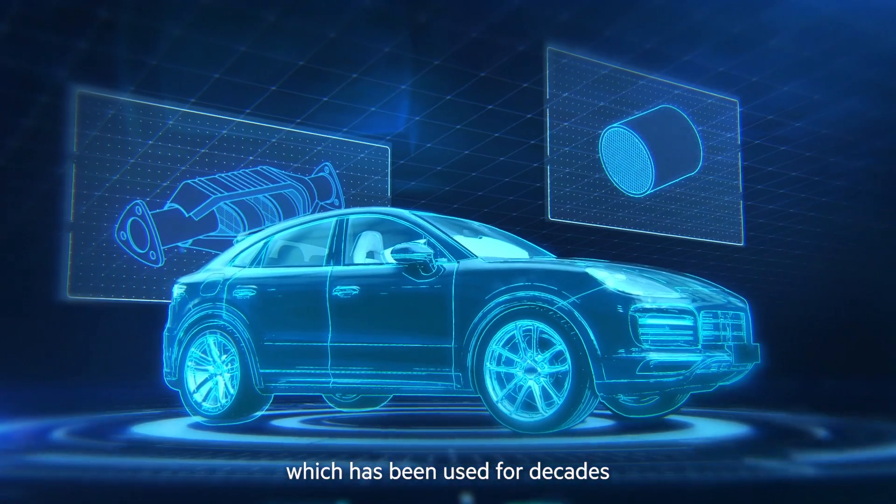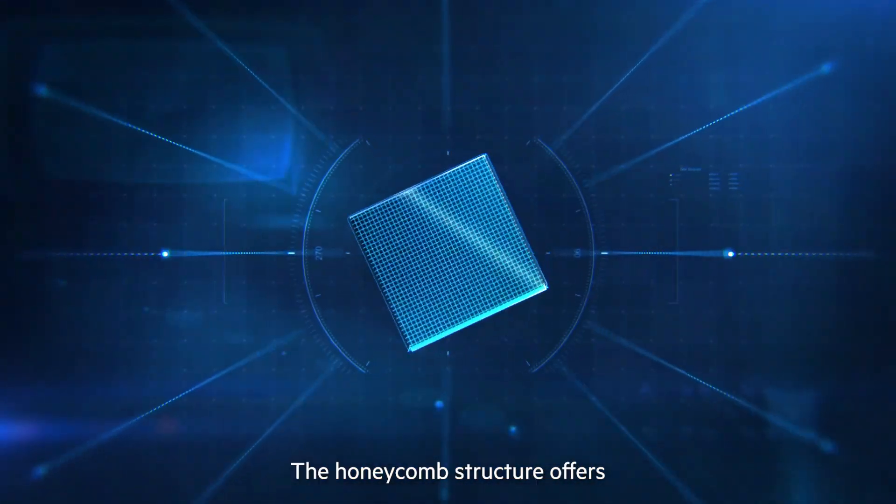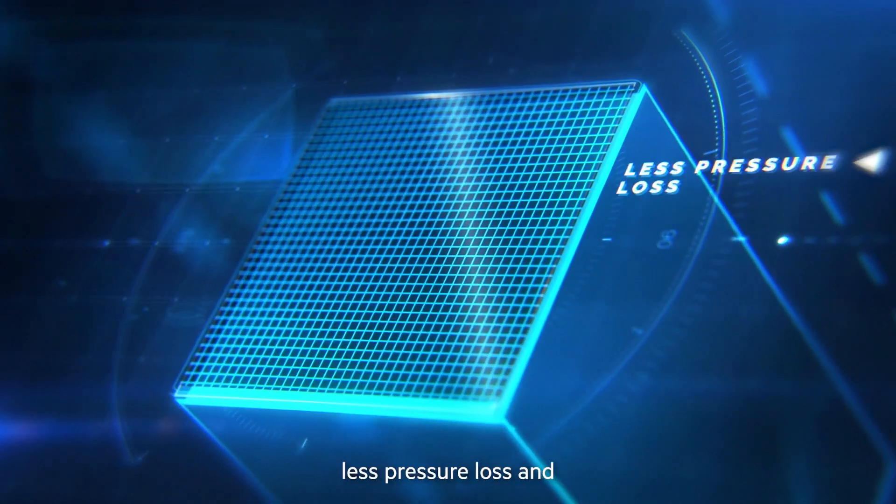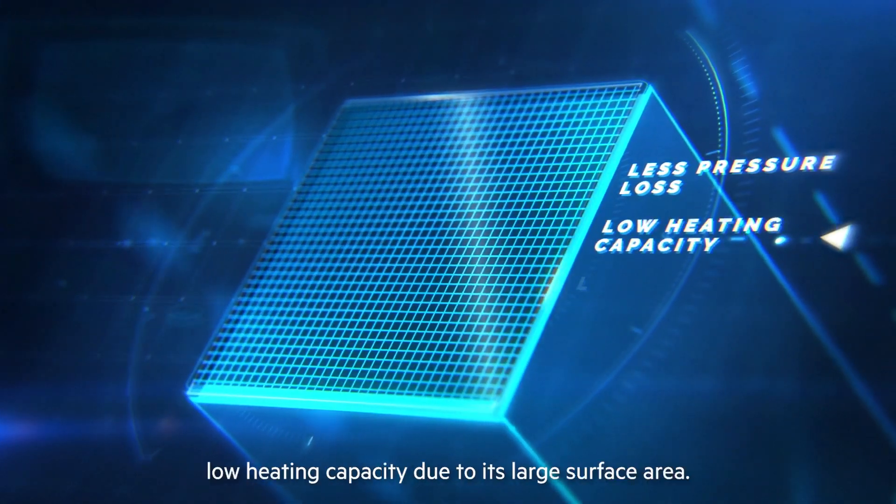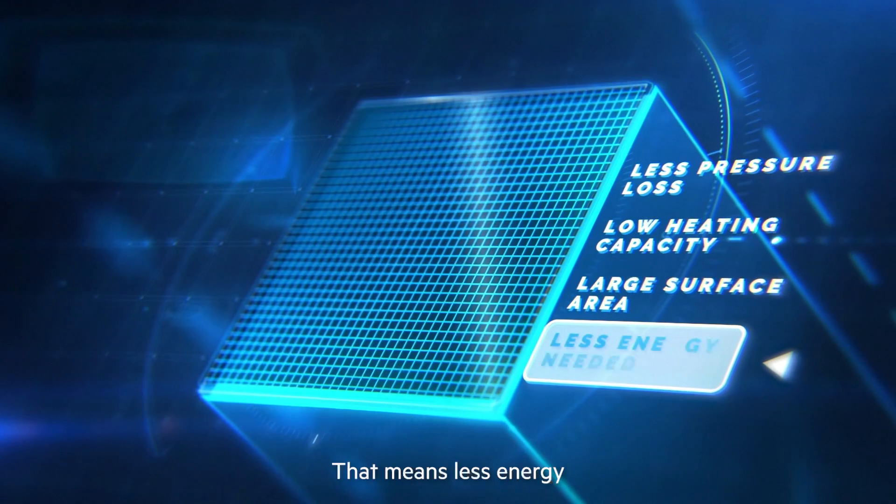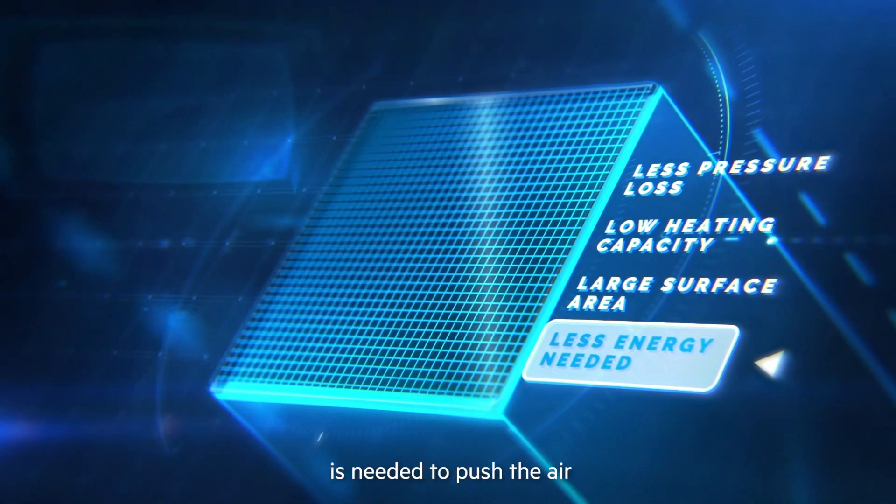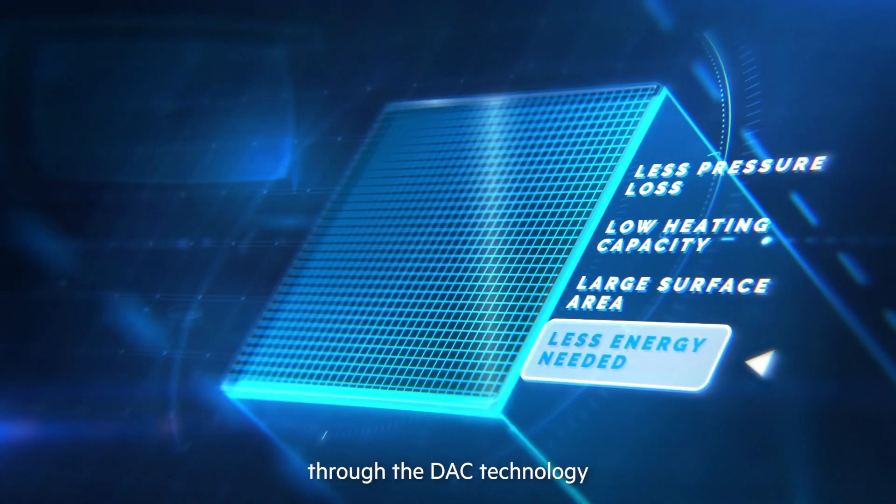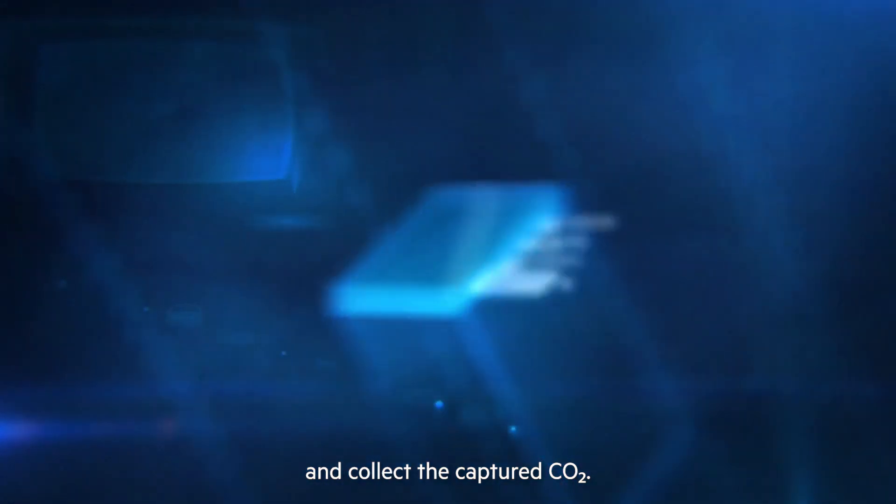The honeycomb ceramic has been used for decades to purify vehicle exhaust gases. The honeycomb structure offers less pressure loss and low heating capacity due to its large surface area. That means less energy is needed to push the air through the DAC technology and collect the captured CO2.